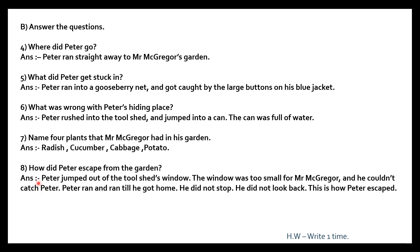Question 8: How did Peter escape from the garden? Answer: Peter jumped out of the tool shed's window. The window was too small for Mr. McGregor and he could not catch Peter. Peter ran and ran till he got home. He did not stop. He did not look back. This is how Peter escaped.